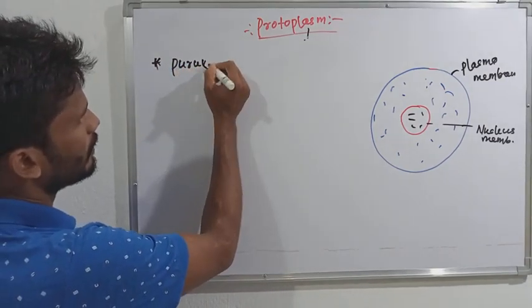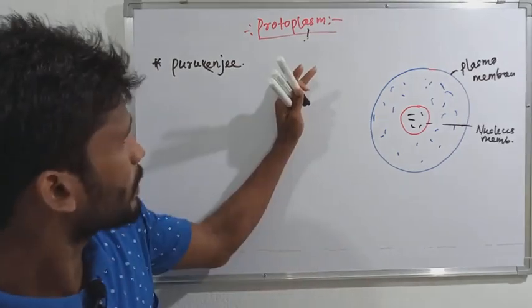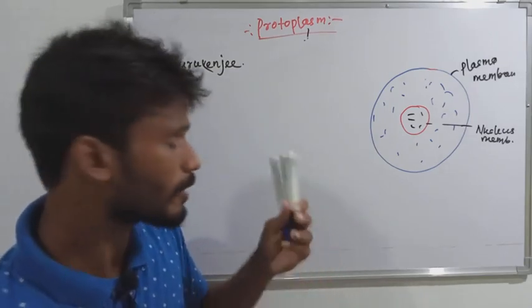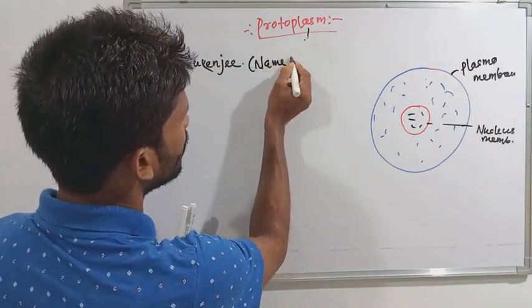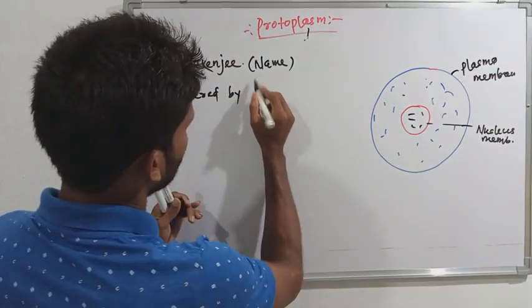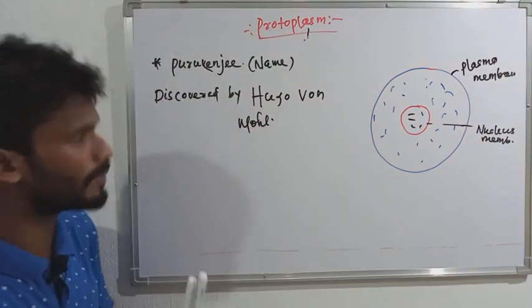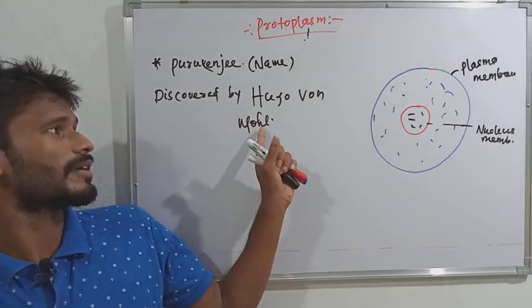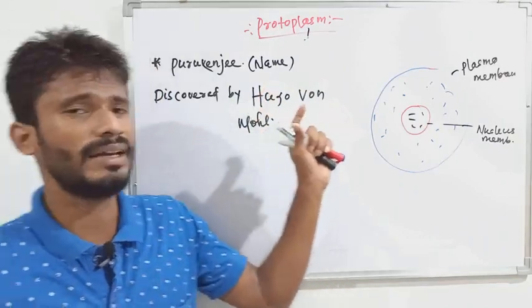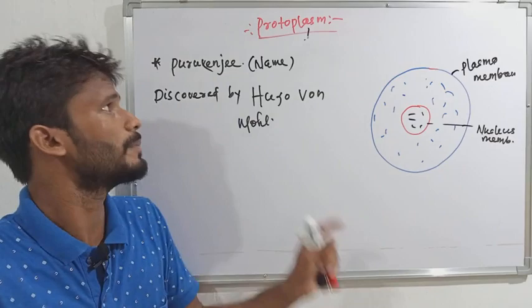Protoplasm was named by Purkinje. But it was discovered by Hugo Von Mohl. So protoplasm was discovered by Hugo Von Mohl and it was named by Purkinje in 1835 or 1839 — please comment below with the correct year.